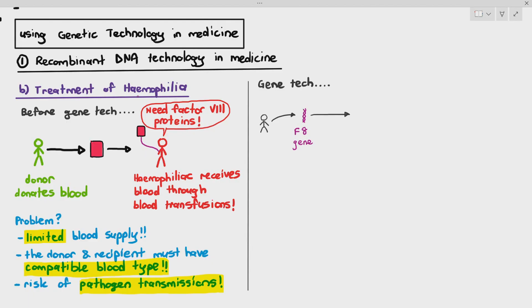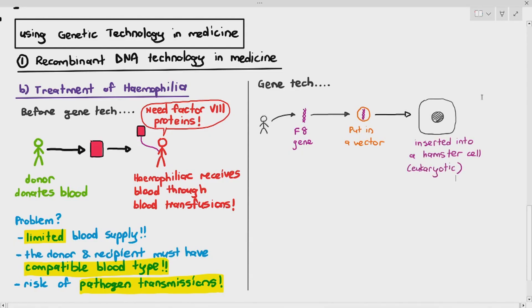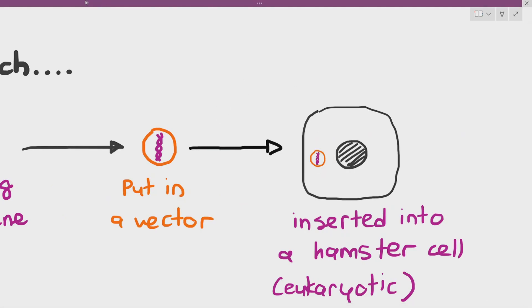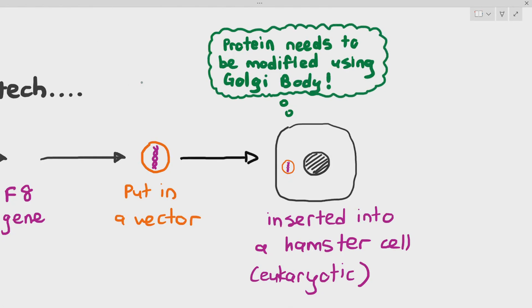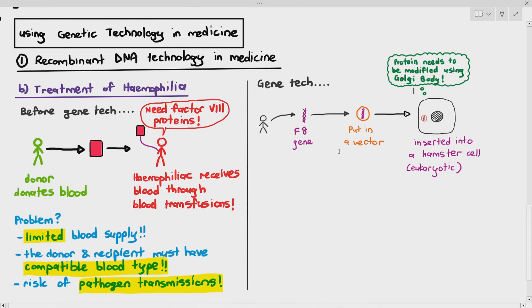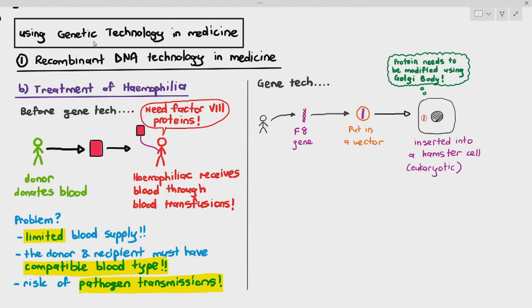From the healthy human, we will extract the normal F8 gene which codes for factor 8 protein. We will put it into a vector and it's inserted into a hamster cell or any suitable eukaryotic animal cells. Now some students will ask me the question, just like the insulin gene which we put into a plasmid which was inserted into the bacterium, why can't we do that? Why do we have to use a hamster cell or a eukaryotic animal cell in this case? There are many reasons, but one of the main reason is factor 8 protein is a very special type of protein that may need to be modified using the Golgi body. And bacteria do not have Golgi bodies, so they may not be able to produce factor 8 or modify the factor 8 to the degree that we want it. So that is why we would prefer to use a eukaryotic animal cell because they have Golgi body and they sort of behave like human cells.